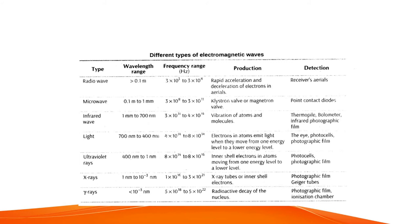Microwaves are detected by point contact diodes. Infrared waves have wavelengths varying from 1 millimeter to 700 nanometers, and frequency ranges from 3 × 10¹¹ Hz to 4 × 10¹⁴ Hz. They are produced by the vibration of atoms and molecules, and are detected by thermopile bolometer or infrared photographic films.